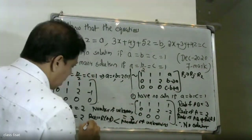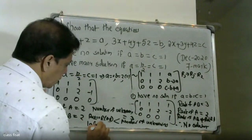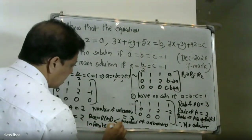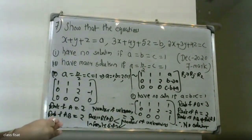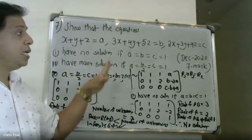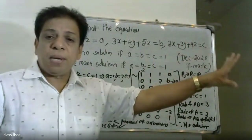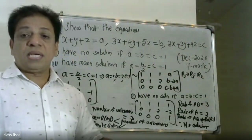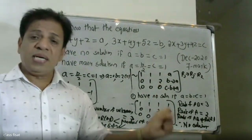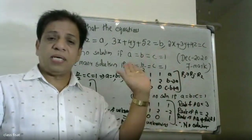The system has infinite solutions. Now we go to the augmented matrix with variables x, y, z and right-hand constants, arranged in first row, second row, and third row.